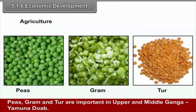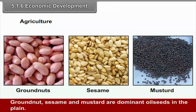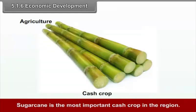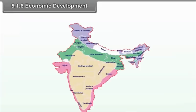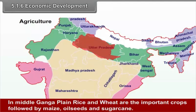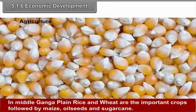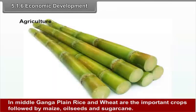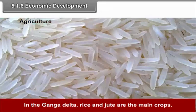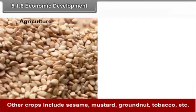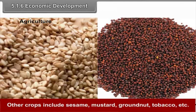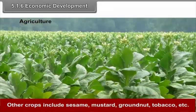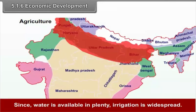Pulses are grown in both Rabi and Kharif seasons. Peas, gram and tur are important in the upper and middle Ganga-Yamuna. Groundnut, sesame and mustard are dominant oilseeds in the plain. Sugarcane is the most important cash crop in the region. In the middle Ganga plain, rice and wheat are the important crops followed by maize, oilseeds and sugarcane. In the Ganga delta, rice and jute are the main crops. Other crops include sesame, mustard, groundnut, tobacco, etc. Since water is available in plenty, irrigation is widespread.